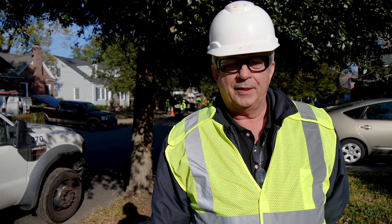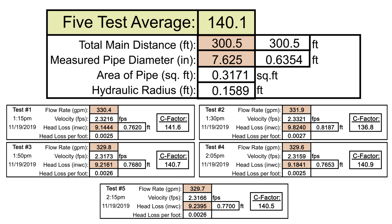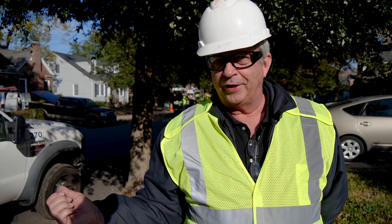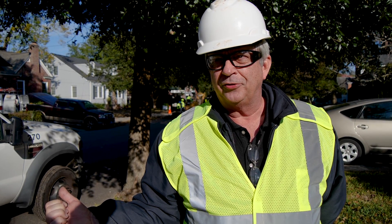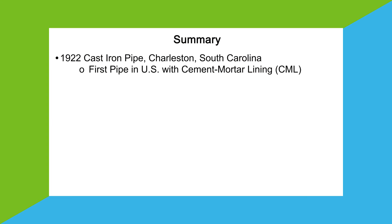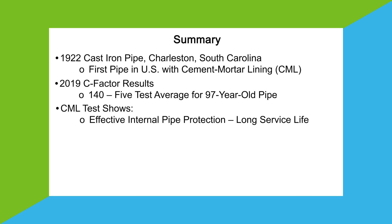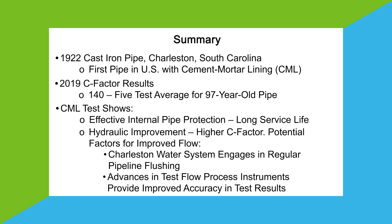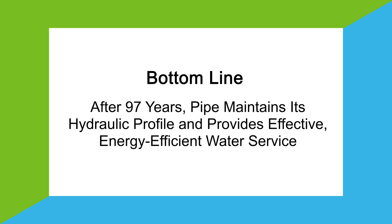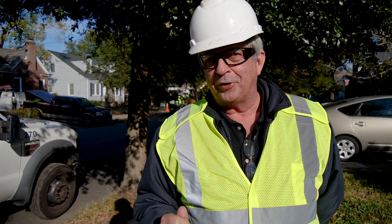We've completed our test today. We use these tests to evaluate the C factors that we get in the field in actual pipelines. The recommendation that our industry makes is that the C factor of 140 is the average of all of the in-situ tests we've done over the years. The results we got here today were excellent. This is a 97-year-old pipeline — the first ever to be provided with a cement mortar lining in the United States. The results indicate that the cement mortar lining is doing its job: protecting the pipe from internal corrosion, providing a better hydraulic profile, which saves energy when pumping water. After 97 years, it's showing that the hydraulic profile is maintaining its good characteristics, protecting the pipe and keeping the water flowing very smoothly.